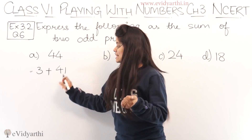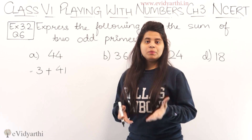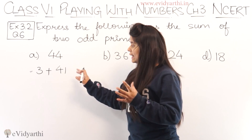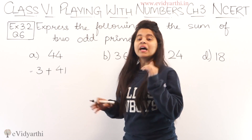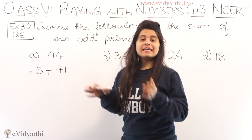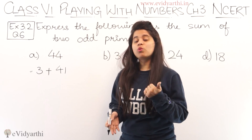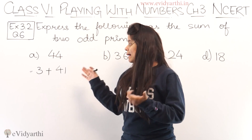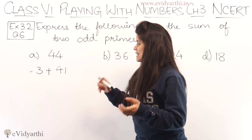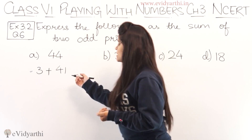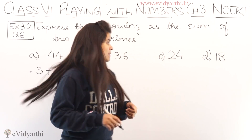Similarly, jaise humne yeh likha hai, aise bahut saare alag bhi ho sakte hain — zaroori nahi hai ki yahi answer hoga. This is only one way; iske alawa aur bhi do prime numbers aise ho sakte hain jo odd bhi hon aur jinका sum 44 ho. So one option is 3 plus 41.